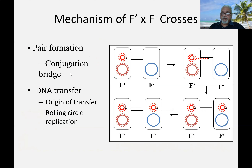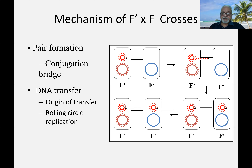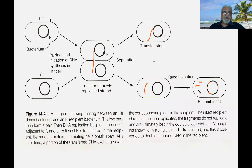To conclude this part: there are three ways of conjugation — F-plus cells, HFR cells, and F-prime cells. The F-prime plasmid is incomplete — it has part of the F plasmid and the remaining part is host chromosomal DNA. These are the three types of donor cells generated.